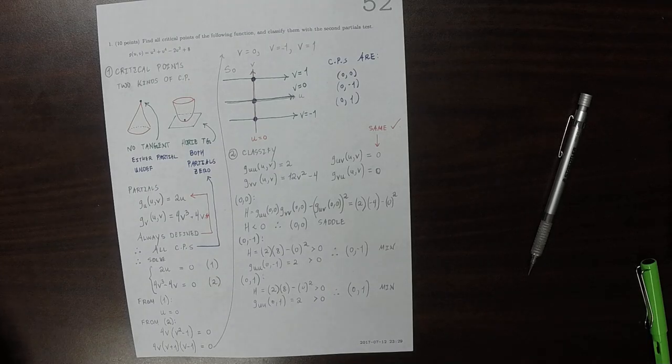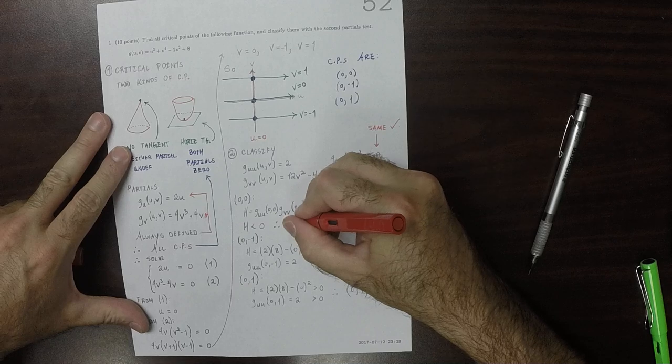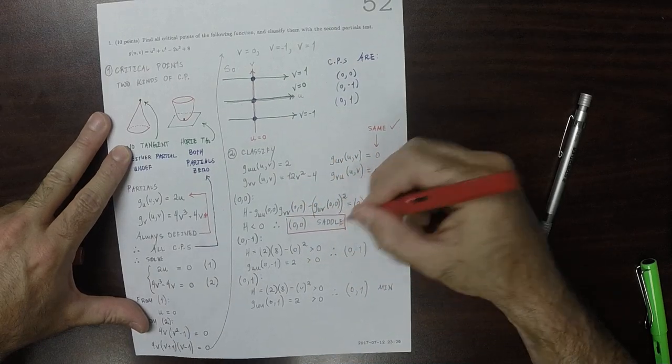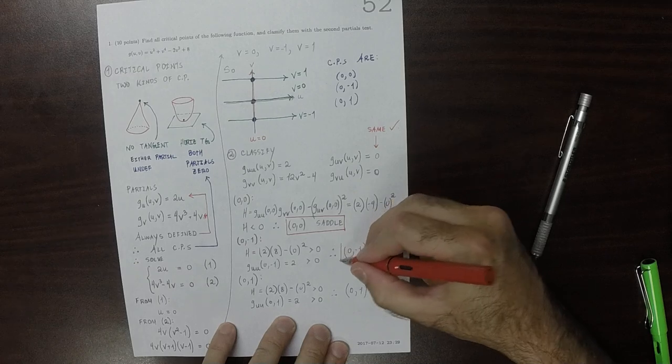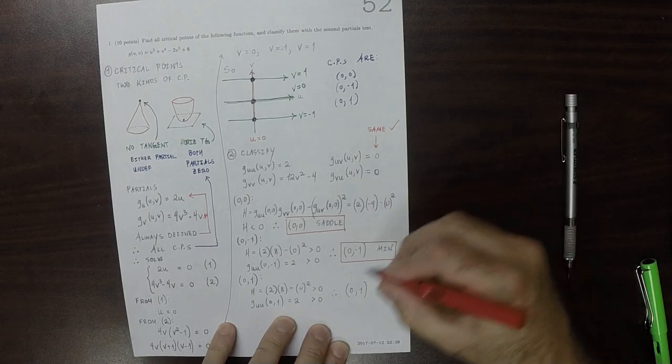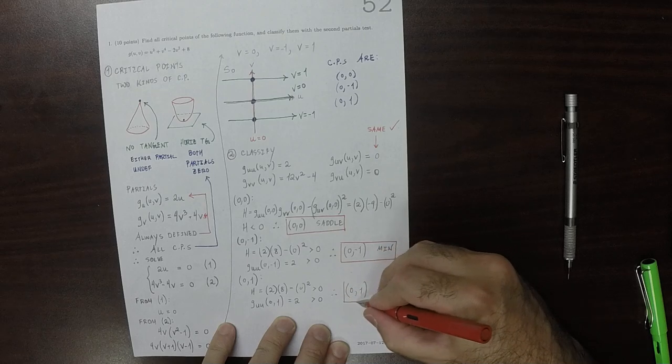So to help the grader find all that, the conclusions were that point is a saddle, that point is a min, that point is also a min.